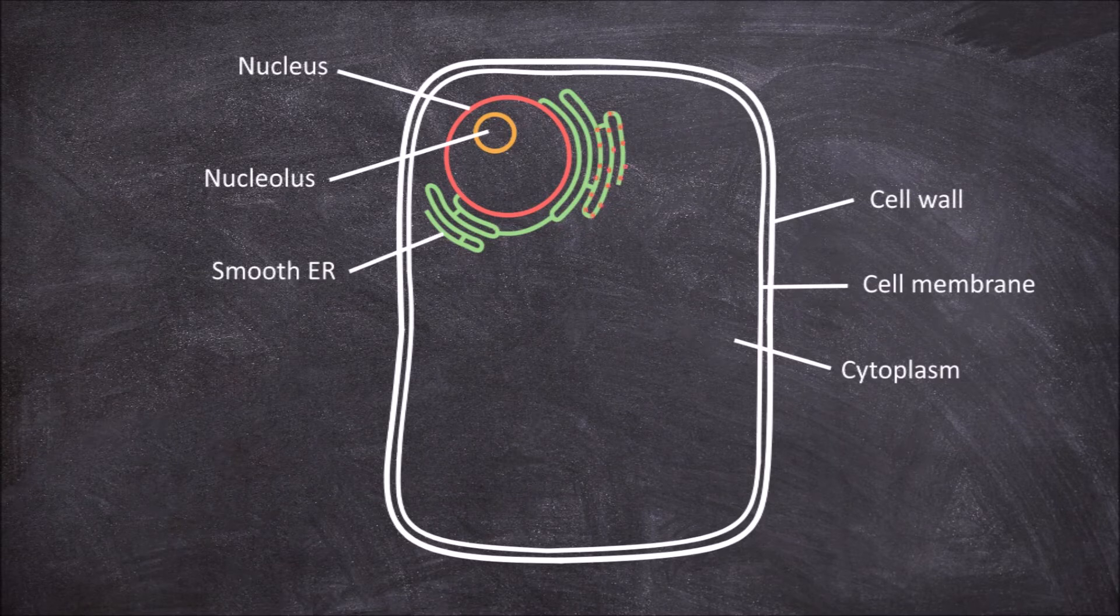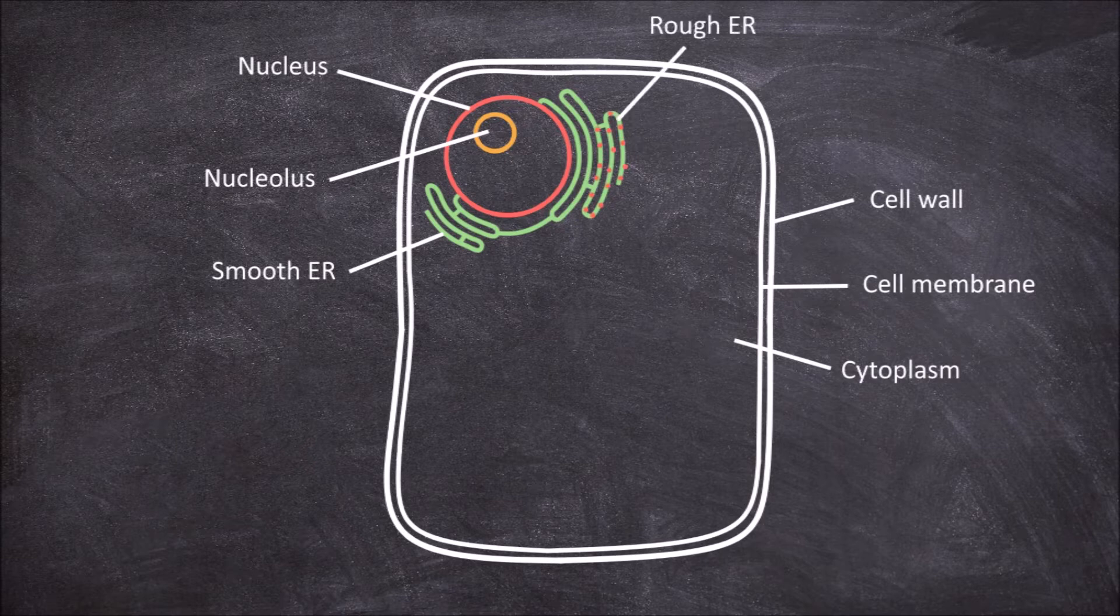Or it can have ribosomes attached, this is called the rough ER. The ER is involved in the process of the synthesis of lipids and proteins in the cell.